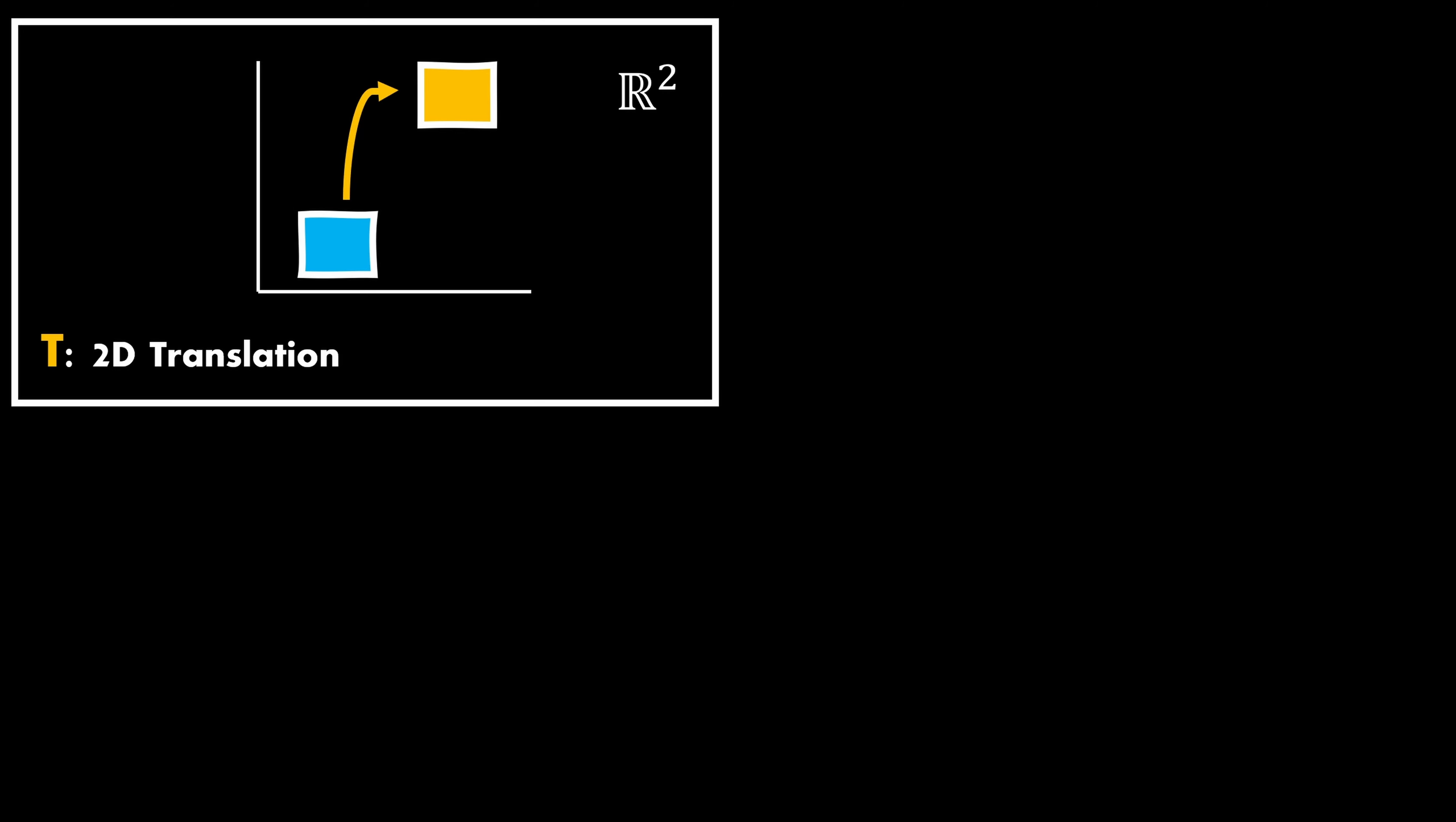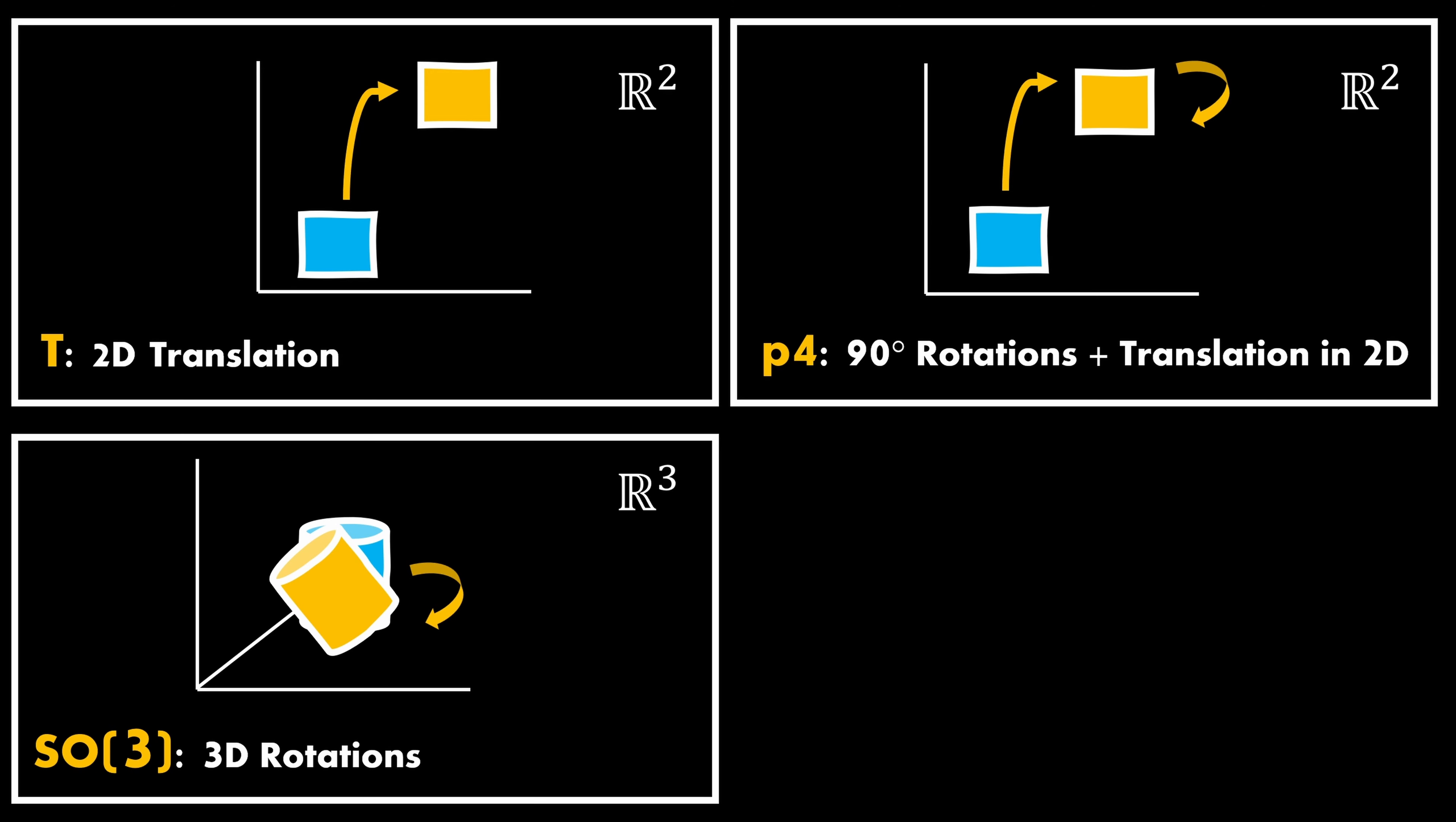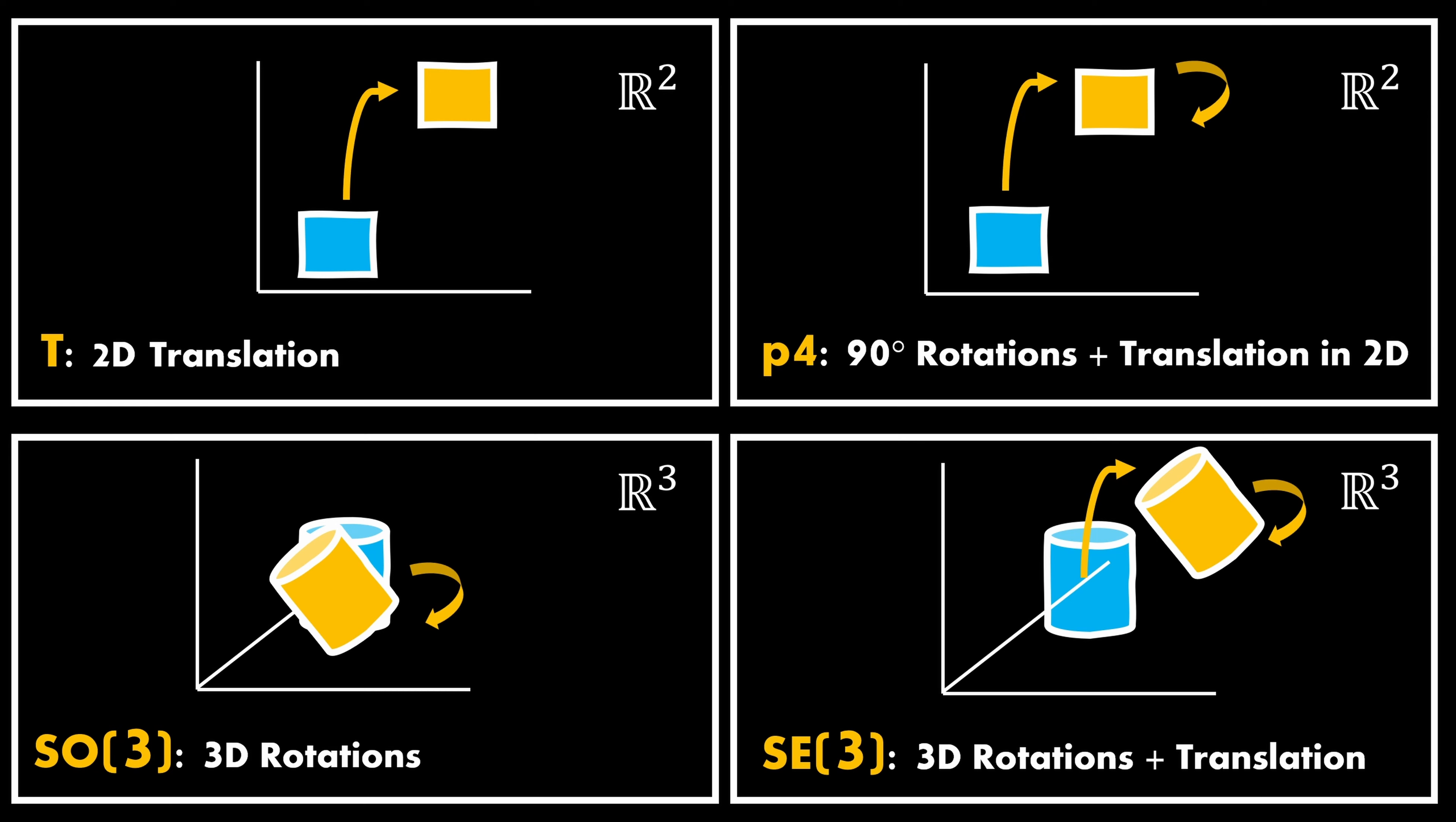Translation in 2D is typically denoted with T. This group is defined over all possible translations in R squared. For example, we shift some object to a different position on an image. We can add 90-degree rotations to this group and we'll end up in P4. So it's a combination of 90-degree rotations and some translation, like shown in this example. When operating in three dimensions, the group of rotations is called SO3, which stands for Special Orthogonal Group. Rotations in 3D can be represented using 3x3 matrices. We can also add translation here and end up in SE3, the Special Euclidean Group. In most of these symmetry groups, in 2D or 3D, the binary operator is matrix multiplication.